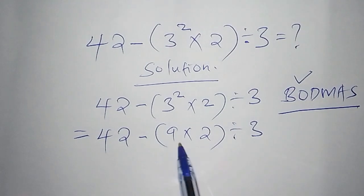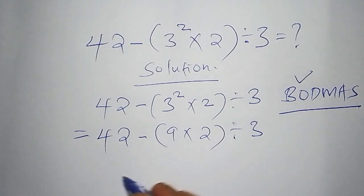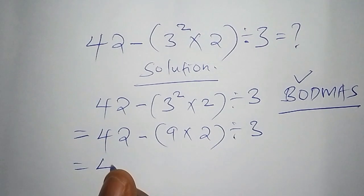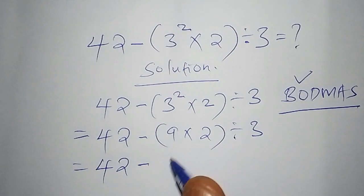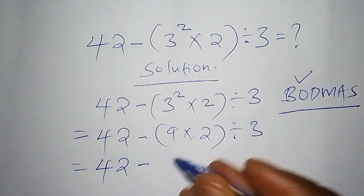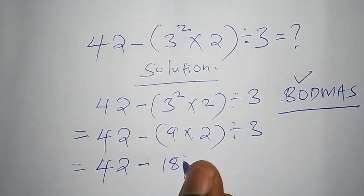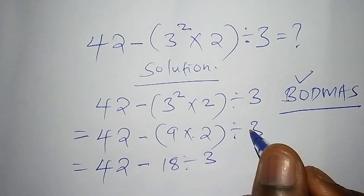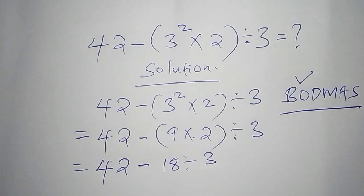The second step, we want to do away with the bracket totally. So this one is equal to 42, then subtract from 9 multiplied by 2 is 18 divided by 3. So we are done away with the bracket.